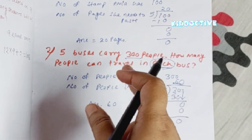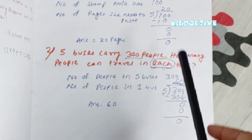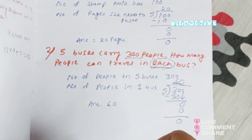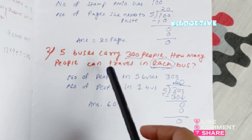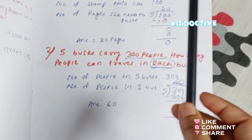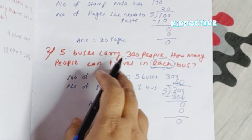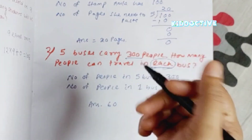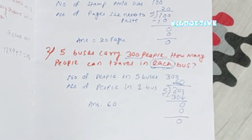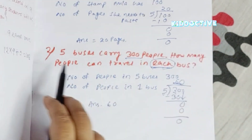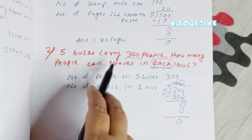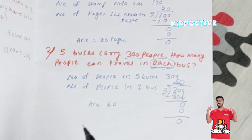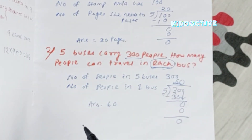I hope you understood how to solve these kinds of word problems and how to identify a division word problem. For multiplication, they give you only one thing — for example, one bus carries 10 people, then how many do five buses carry? You multiply because you are adding more. But here, five buses carry 300 people and they ask about a single bus — that's division. Thank you for watching, do like, share, and subscribe.